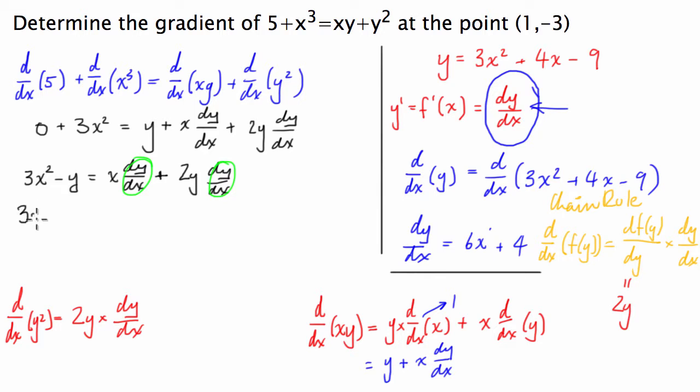So we can take that out the front and then we can divide both sides by x plus 2y. And if we do that, let me just change colour, we're going to have dy/dx is equal to 3x squared minus y over x plus 2y.